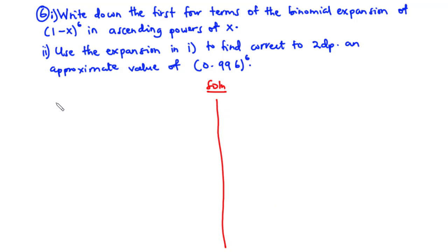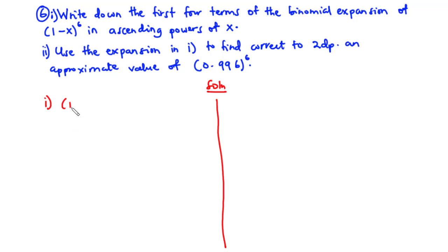To solve part i, we find the first four terms of the binomial expansion of (1 minus x)^6 in ascending powers of x. If n is any rational value, and x is between negative 1 and 1, then the general binomial expansion of (1 plus x)^n is given by a standard series.